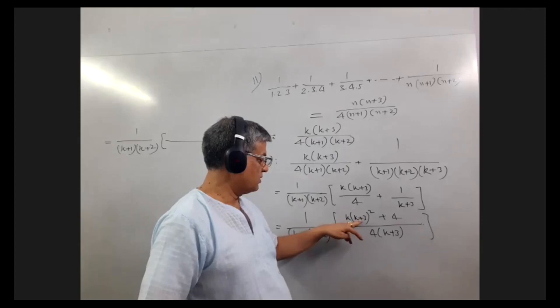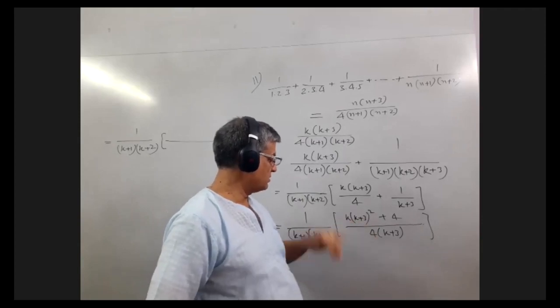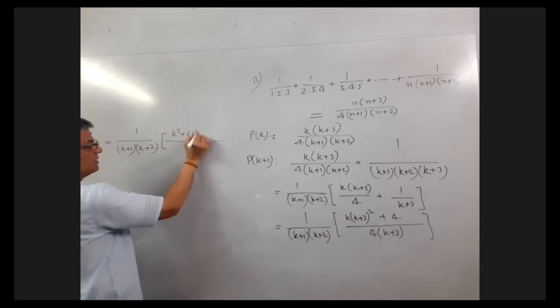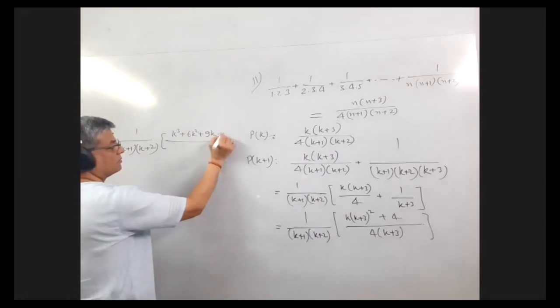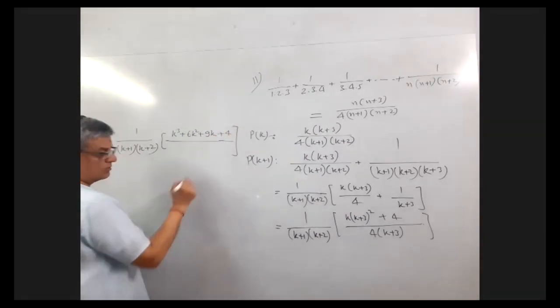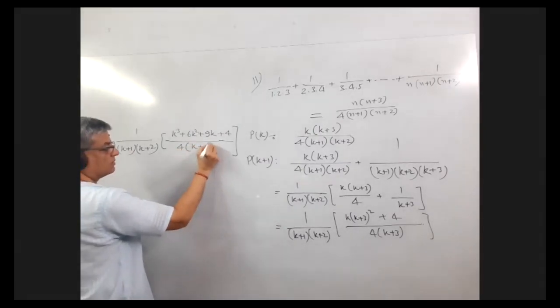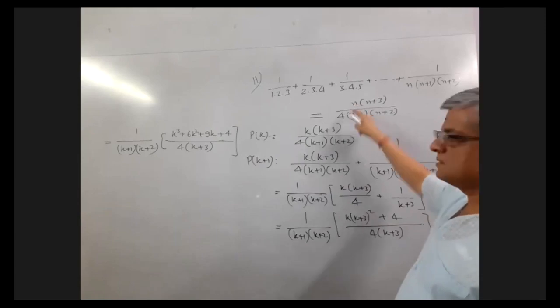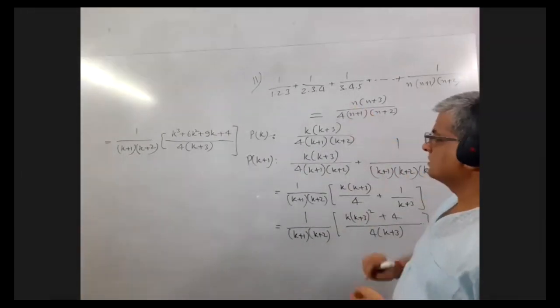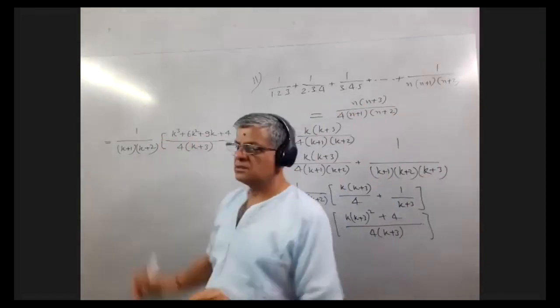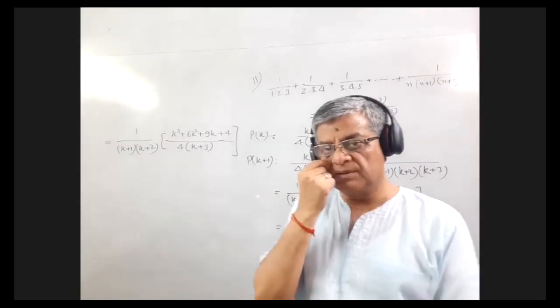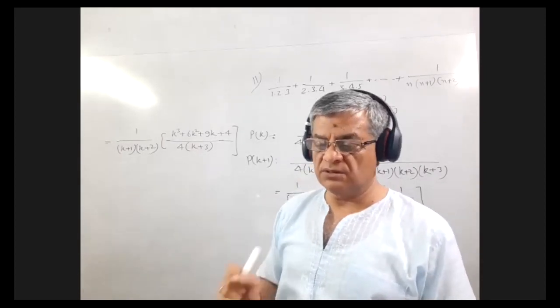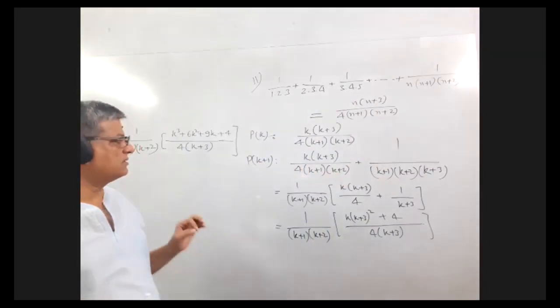K square plus 6k plus 9, and k is multiplied with all of them. That is k cube plus 6k square plus 9k plus 4 upon 4 into k plus 3. Now as I explained to you in the last question, we need k plus 1 in place of n here. K plus 1 means that k plus 1 should be a factor of this entire expression. If k plus 1 is a factor of this, then we can apply factor theorem here. Putting the value of k as minus 1, this should become 0.